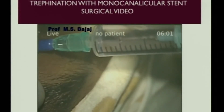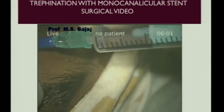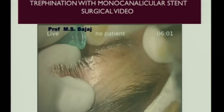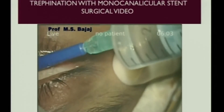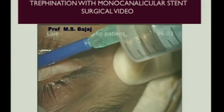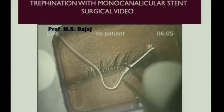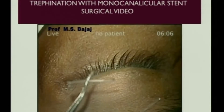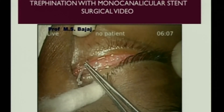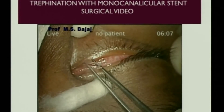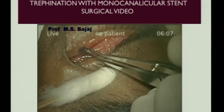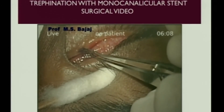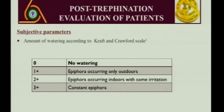In this series we also augmented the effect with Mitomycin C 0.04%, which was kept for about 30 seconds and then irrigated. After that, you can see the monocanalicular stent being inserted — it is snugly placed in the punctum without needing a suture.